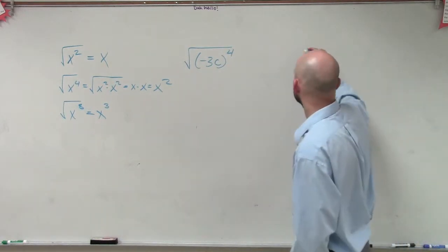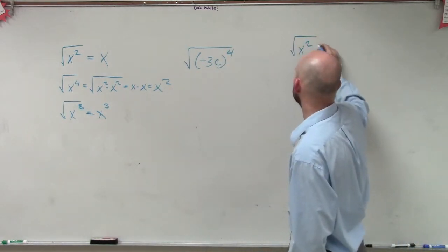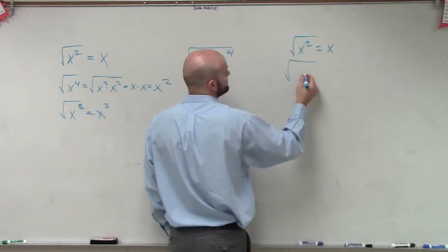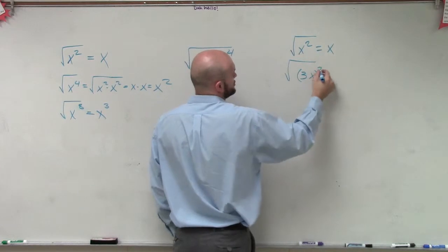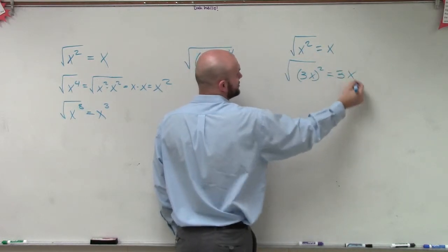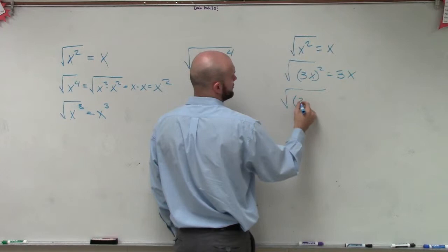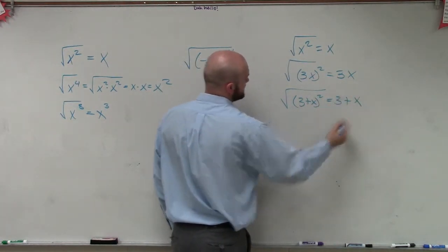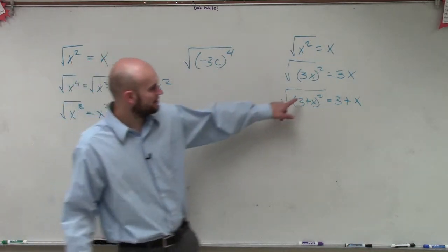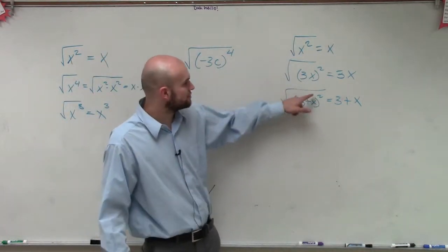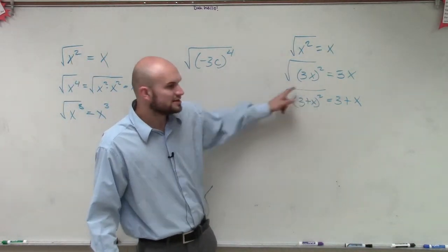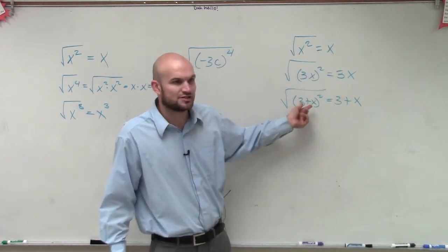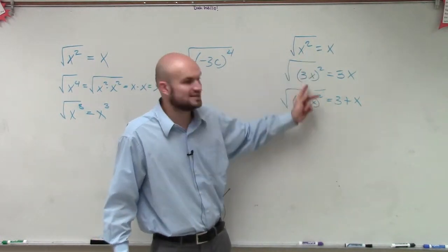We're not actually taking the square root of the negative number — I'll explain in a second. If I said the square root of x squared, the answer is x. The square root of 3x squared equals 3x. The square root of (3 + x) squared equals 3 + x. Since the square root and the squaring undo each other, we never end up actually having to take the square root of what's inside our parentheses.